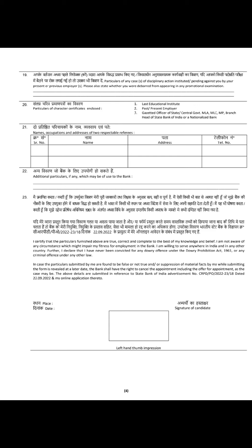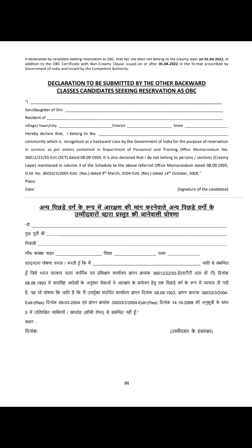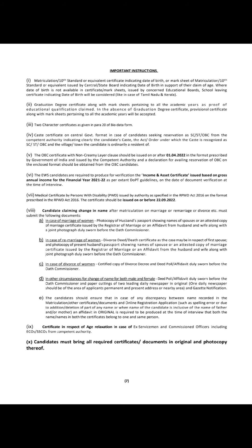उसके बाद यह identity certificate है - इसको आपने किसी gazetted officer से attest करवाना है, जिससे character certificate attest करवाएंगे उसी से identity certificate भी attest करवा सकते हैं। एक comment था कि कितने सालों का जानते हैं वाला mention करें - तो आप 5 साल, 6 साल, 2 साल, 3 साल लगा सकते हैं। मैंने 5 साल लगाया था, तो minimum 5 साल डाल दीजिए। उसके बाद अगर OBC में reservation ली है तो उसका declaration है।